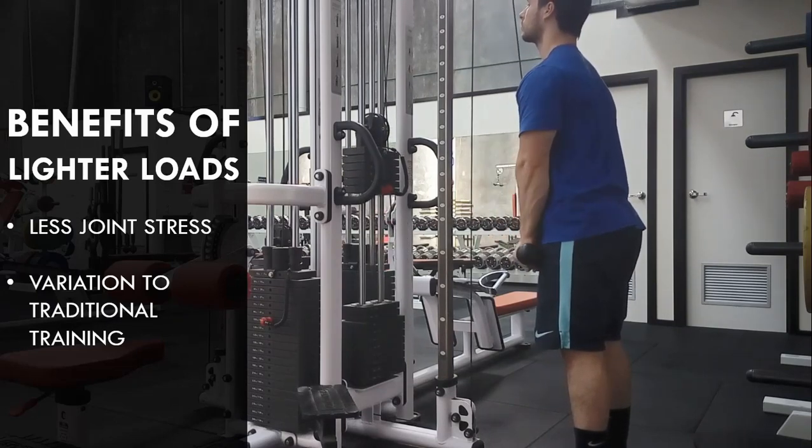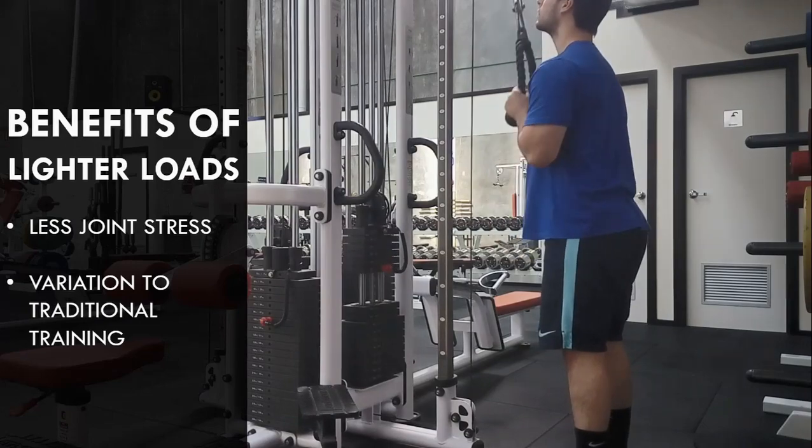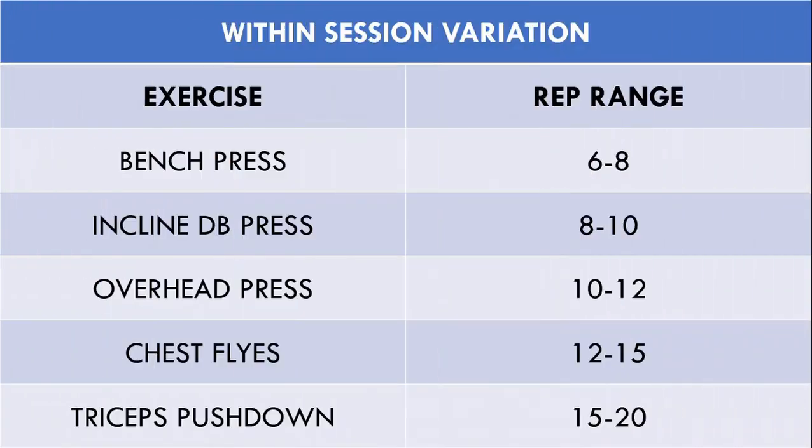For example, an individual upper body pressing session may use a rep range of 6-12 for the compound lifts like bench press and overhead press, and a rep range of 12-20 for accessory exercises like chest and tricep isolation exercises.